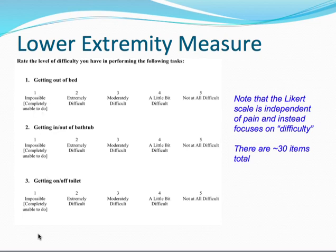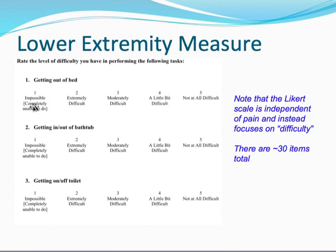We can see the items are relatively simple. The construct isn't related to health — it's more about the patient's difficulty in performing a task, period. So this is a functional scale that's independent of health status. There are five categories for each item, which gives it the potential to be more responsive. And as we saw in the comparison to the Harris-HIP scale, it was indeed more responsive.